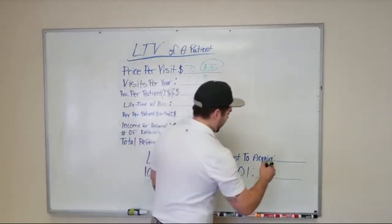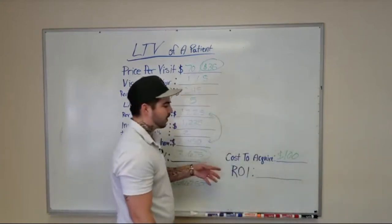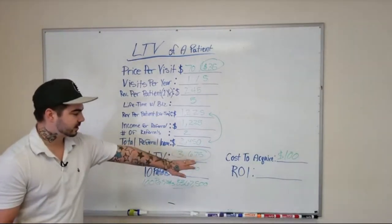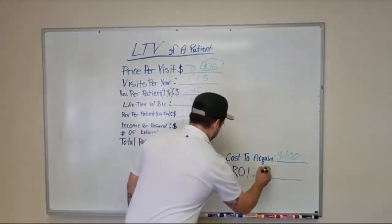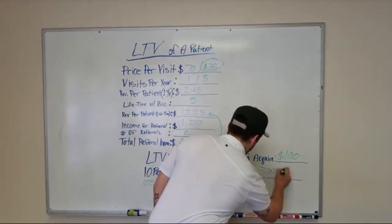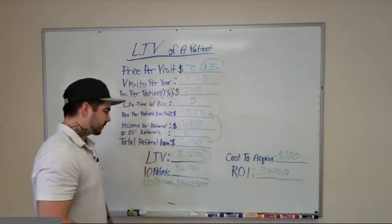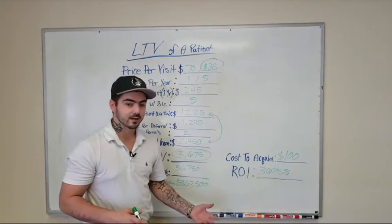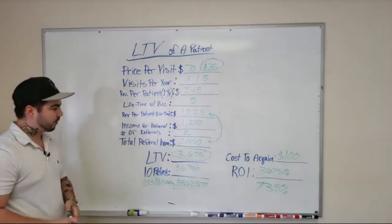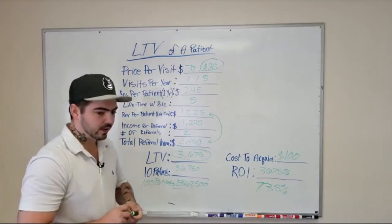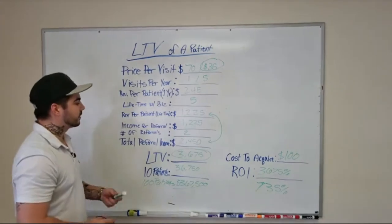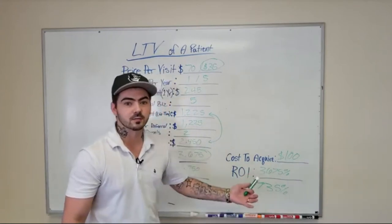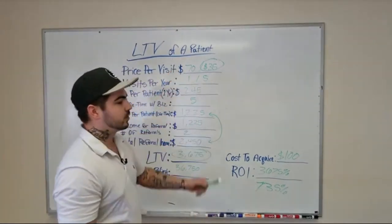Let's say it cost them $100 to acquire me. Spending $100 to make $3,675 gives a return on investment of 3,675%. As you can see, the ROI here is extremely high. You don't want to make a million dollars but spend $999,999 to make it — that leaves you with only a dollar. That's why you need to track what you're spending relative to what you're earning.